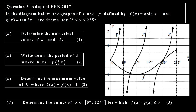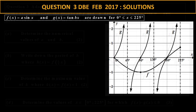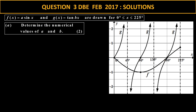This third question comes from February 2017 and is also slightly adapted. We're given two curves — a sine curve and a tangent curve — with the domain from 0 to 225. We determine the numerical values of a and b. The a value is the amplitude: this is a negative sine graph with amplitude 1, so a equals negative 1. For b, which affects the period: the normal period for tangent is 180, but here the period is 90. So b equals 180 divided by 90, which is 2.